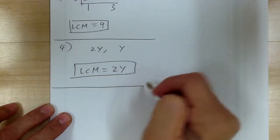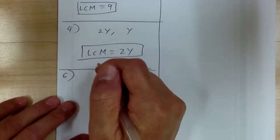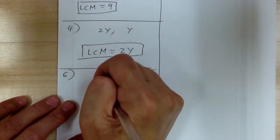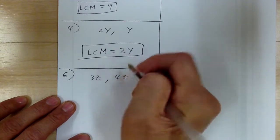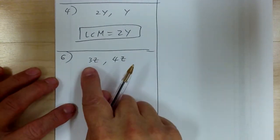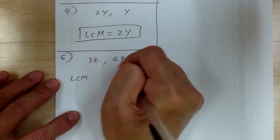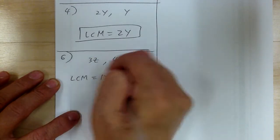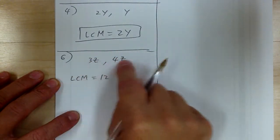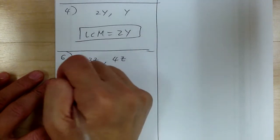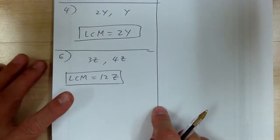Let's do number 6. You've got 3z and 4z. The LCM of 3 and 4 is equal to 12. The z and the z would be just z. So what you do is you take the higher one. And they're the same, so you just pick any one.